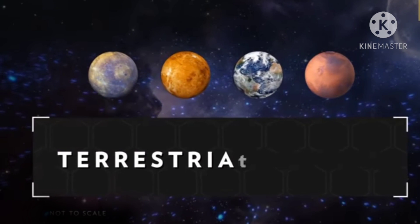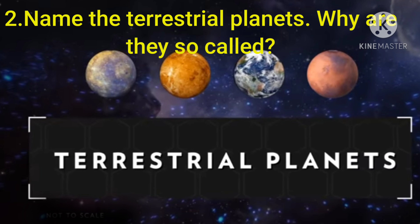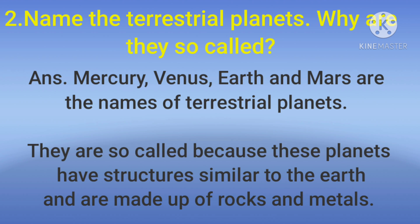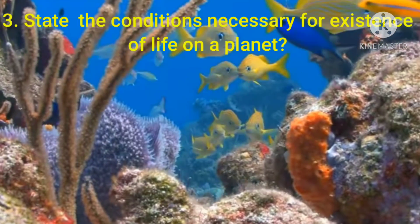Next question is, name the terrestrial planets. Why are they so called? Answer: Mercury, Venus, Earth and Mars are the names of terrestrial planets. They are so called because these planets have structures similar to earth. These are made up of rocks and metals.